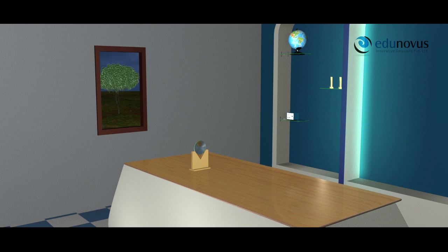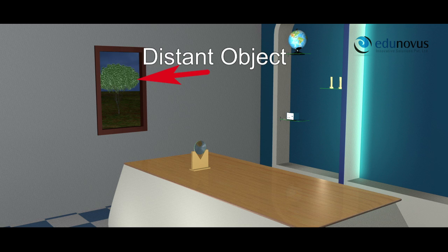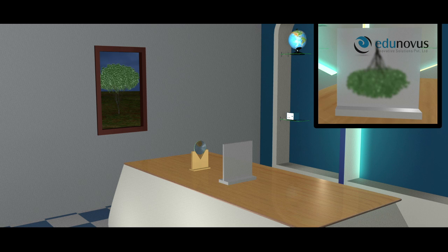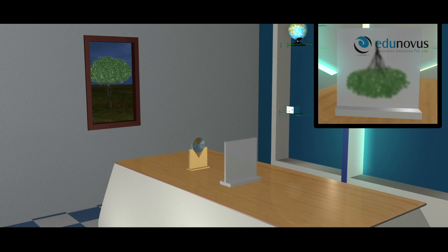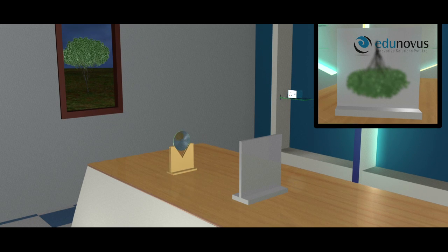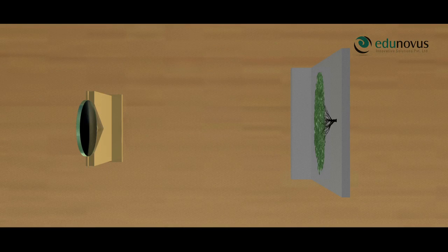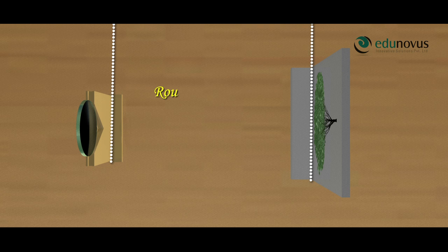To find the rough focal length, obtain the image of a distant object on the screen. When you look at the window, you can see a tree which is a distant object. Face the lens towards the distant object and obtain its inverted image on the screen. Move the lens forward and backward until you get a sharp image. Measure the distance between the lens holder and the screen with a scale — this is the rough focal length.